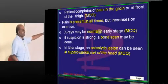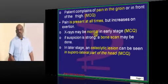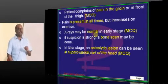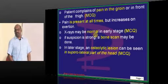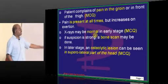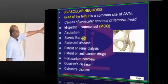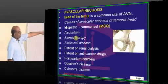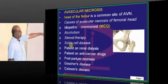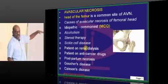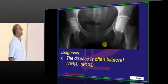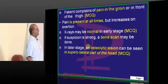In the early stages, examination will be normal, but you should still suspect it in any given patient. Risk factors — don't forget: sickle cell anemia, idiopathic, steroid therapy. These are routinely and repeatedly asked MCQs in the exam.